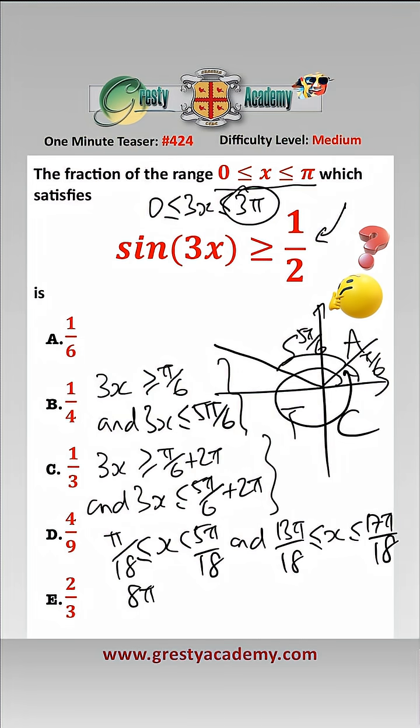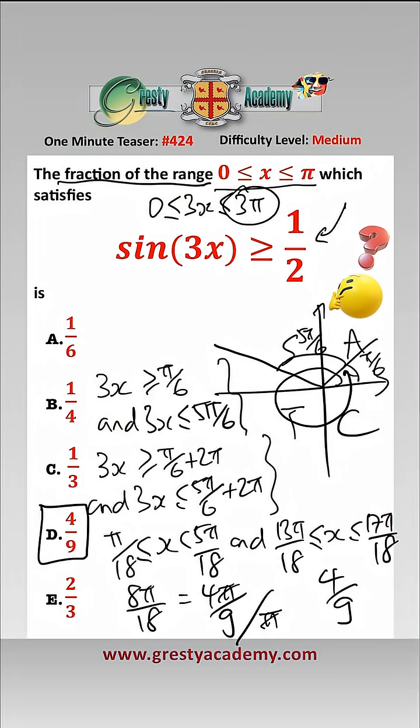That is, the total range is 8π/18, which is 4π/9. But they ask us for the fraction of the range, so we divide that by π. π cancels and the fraction is 4/9, which is answer D.